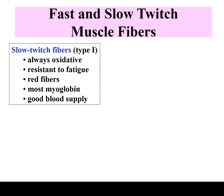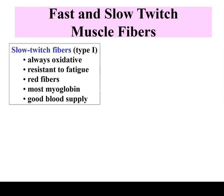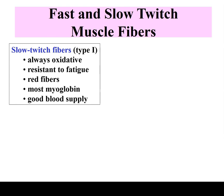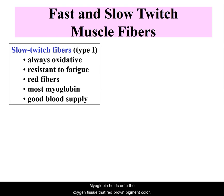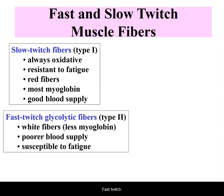Slow twitch fibers are resistant to fatigue. Because oxygen is available from the good blood supply and myoglobin holding onto oxygen molecules, there is less anaerobic respiration and therefore less lactic acid. You don't need to store as many glucose molecules because blood and capillaries are plentiful. This is equivalent to the dark meat of chicken.